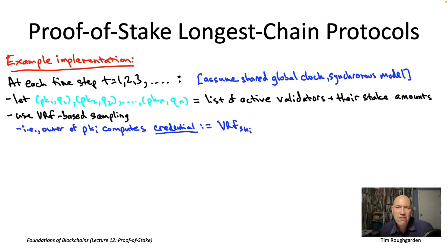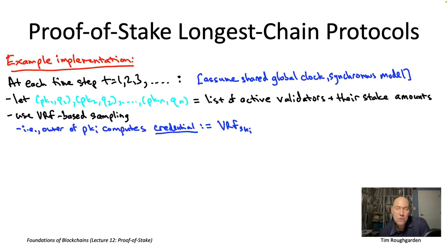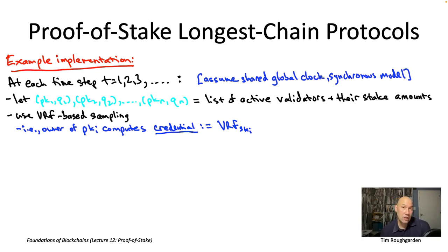Let's remember the defining properties of a verifiable random function. First, it's easy to evaluate if you know the right private key: if you possess SK sub i, you can easily compute the VRF's output on any input. If you don't know the private key, you should not be able to guess what that VRF output should be. On the other hand, it's efficiently verifiable — if a VRF is computed correctly, anyone can verify the correctness of the alleged output knowing only the corresponding public key. More concretely, you might think of a verifiable random function as a signature scheme with unique signatures to avoid grinding attacks.